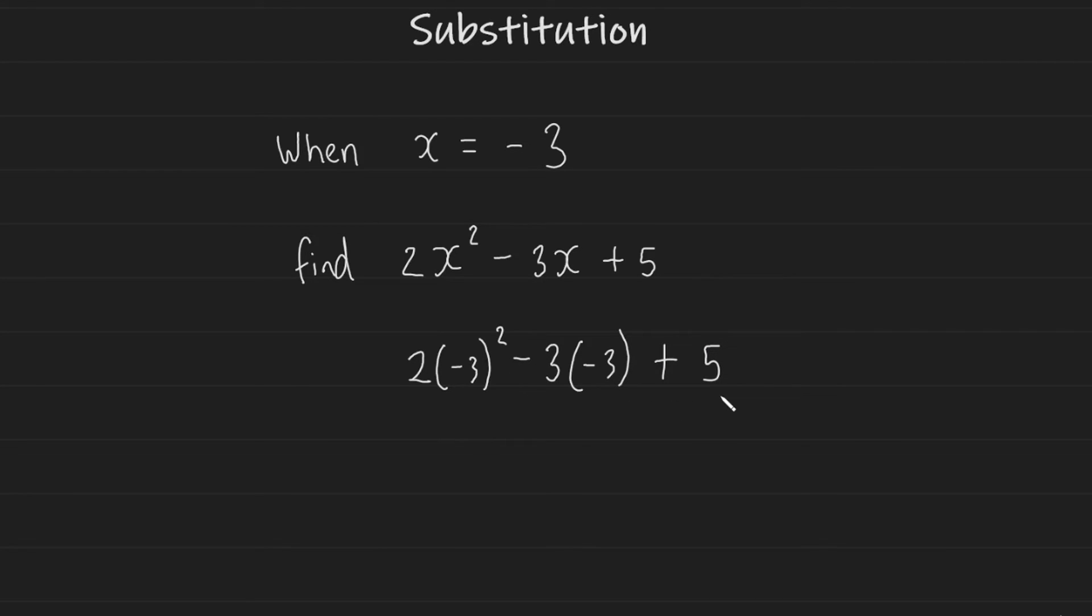Inputting this into your calculator as it looks will give you the correct answer, or you could just calculate it mentally. (-3)² is 9 × 2 is 18, -3 × -3 gives us +9, and we have +5 at the end. Adding all of this together will give us 32.